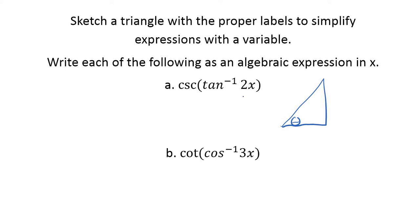Arctangent of 2x. So that means tangent theta equals 2x, right? So if I set that up, 2x over 1 I could write. Well then what would this side be? If we use Pythagorean theorem, it would be this side squared, plus this side squared, square root of that. And so this side of my triangle would be square root of 1 plus 4x squared.